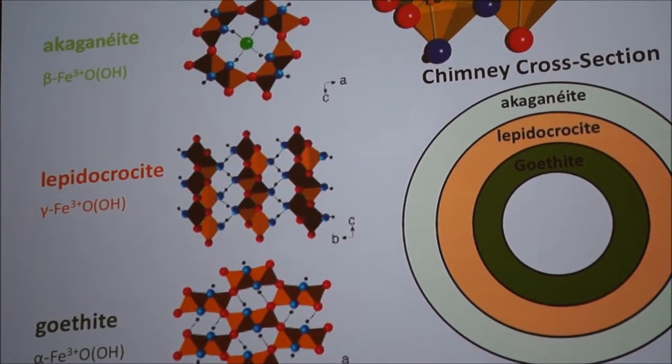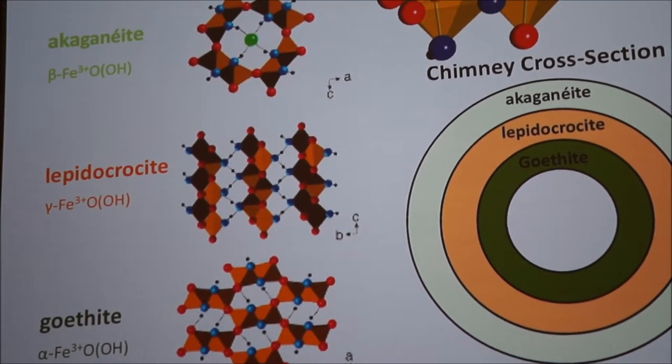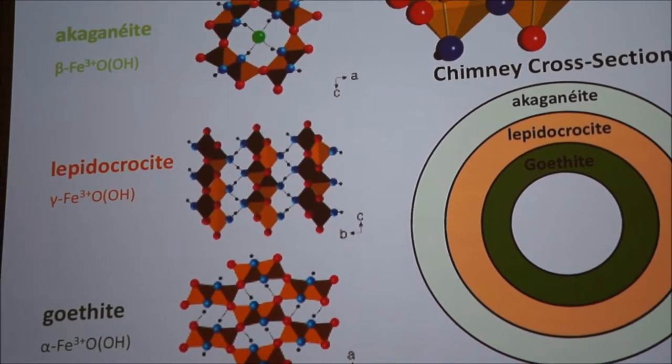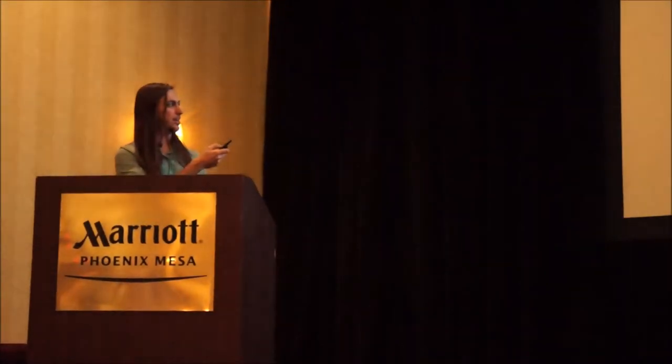Because we get these concentric rings of akaganeite, lepidocrocite, and goethite as we go towards the interior of a chimney. That makes sense because we're using ferrous and ferric chloride in our reservoir solution, and that is potentially affecting the mineralogy within the chimney and causing a compositional gradient to form, reflective of the electrochemical gradient.